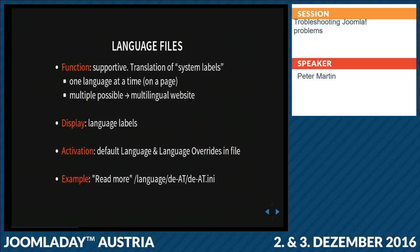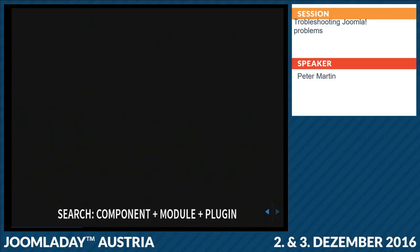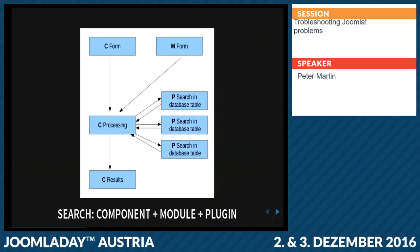For language files, if there are problems with languages, look in the language overrides. If you have components, modules, and plugins working together, take the Joomla search as an example: you can use a search module or component with a form field. When you press Enter, the component processes your request but doesn't know about the database structure — so there are search plugins (content search, contact search) that each know about their specific database. The result is also displayed via a component.